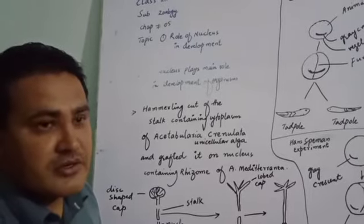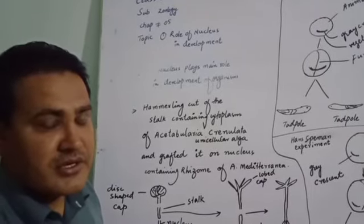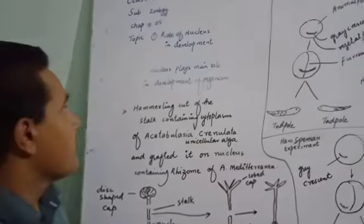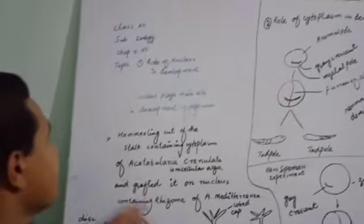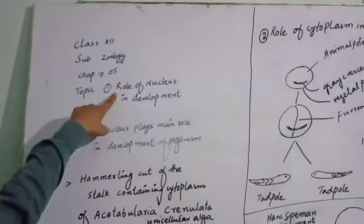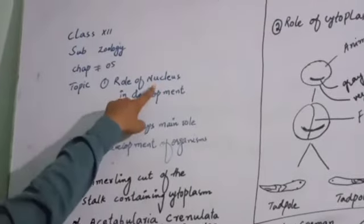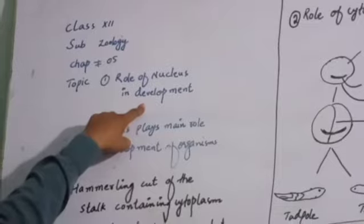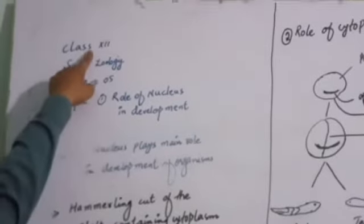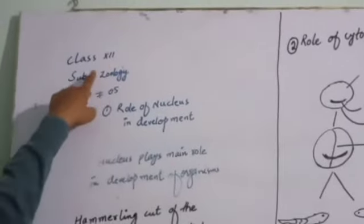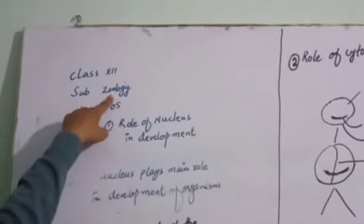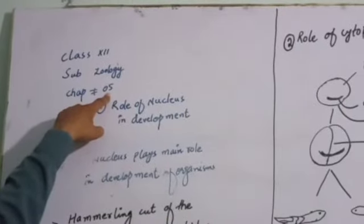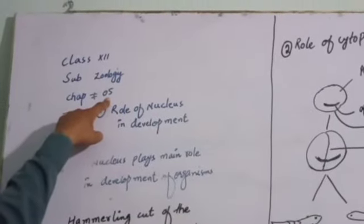I am Kermit Lakhur, Lecturer Kormandiki Karl Kandiyav. Today I have selected a topic from class inter subject Zoology, Chapter No. 5, Growth and Development.